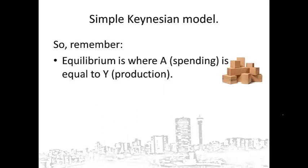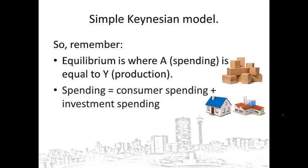Let's go back to the basics of the model. Another basic characteristic of the Keynesian model is that total spending is equal to consumer spending plus investment spending. This will change when we add a government and a foreign sector to the model. For now, total spending is equal to what households spend and what firms spend.